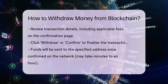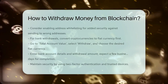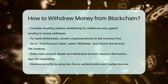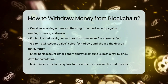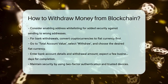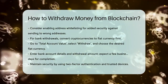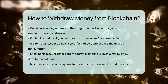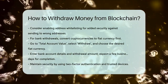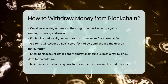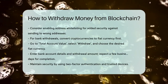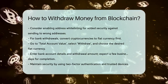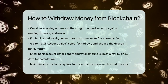If you're withdrawing to a bank account, you'll need to convert your cryptocurrencies to fiat currency first. Go to the Total Account Value section, select Withdraw, and choose the fiat currency you want. Enter your bank account details and the amount you wish to transfer. This process may take a couple of business days to complete.